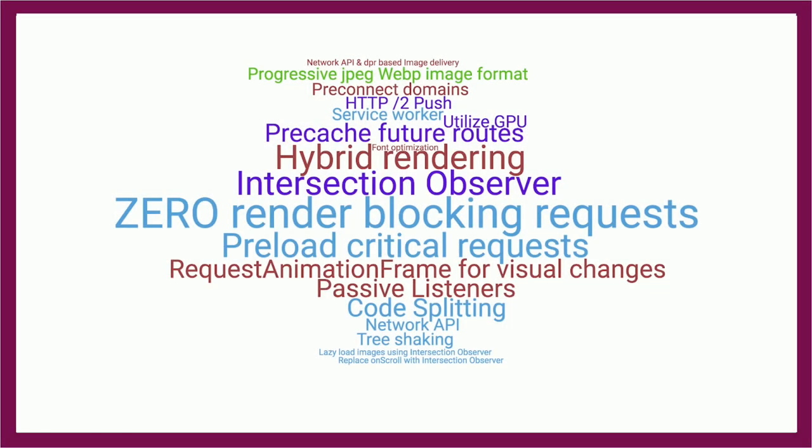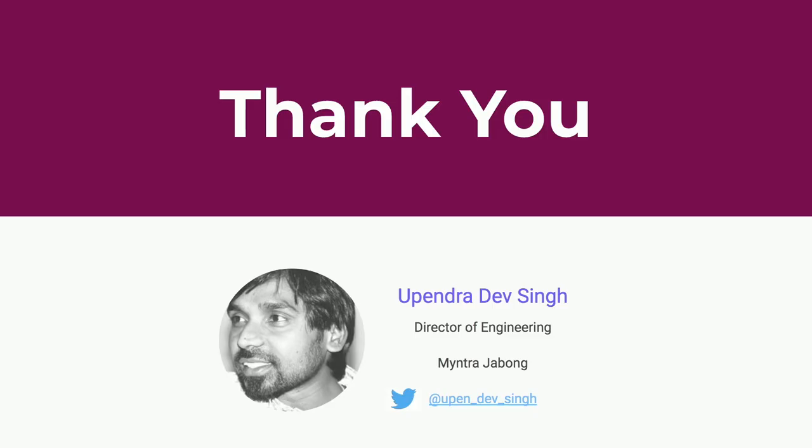Summary: I also didn't cover passive listeners, the Network API for serving different images for different network categories, and Intersection Observer — those are additional things we used to achieve these numbers. We've done all of these things in order to achieve that result. Thank you.